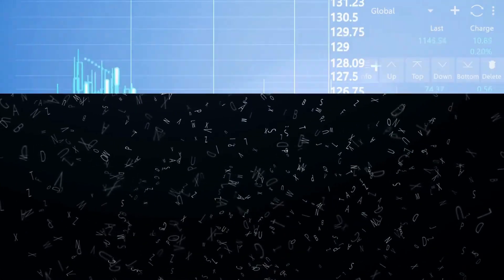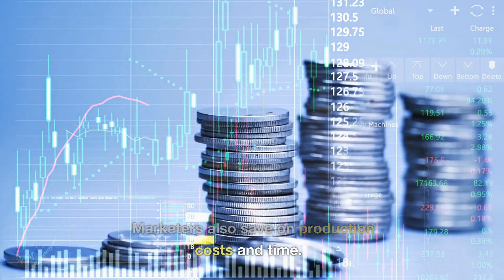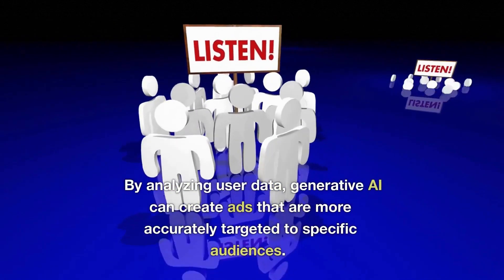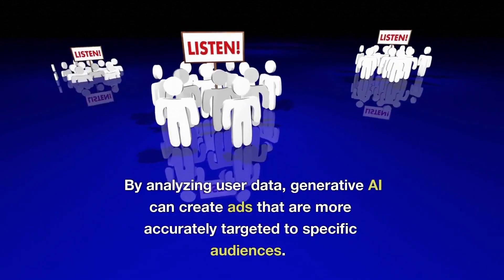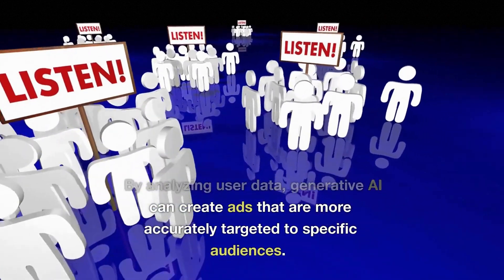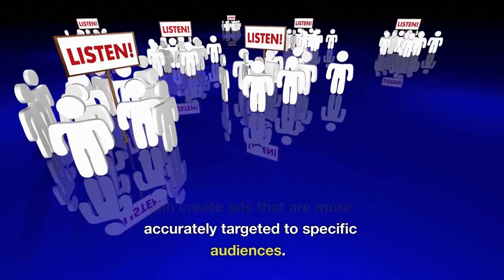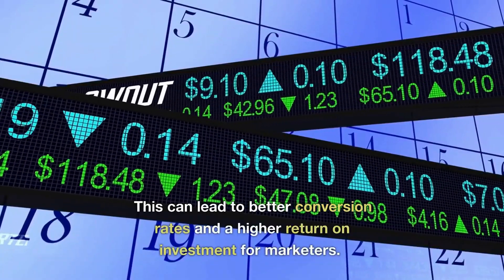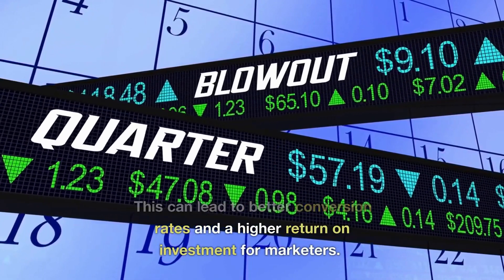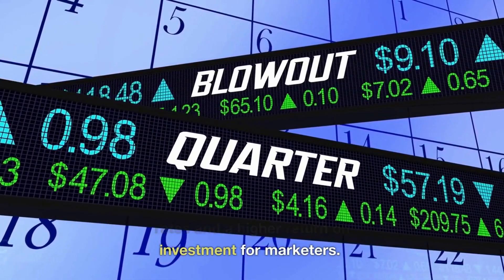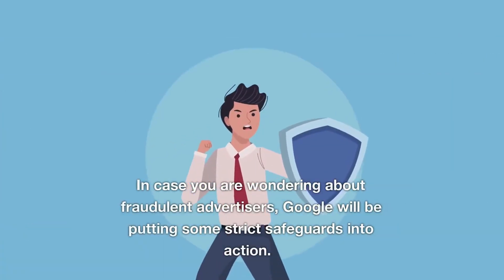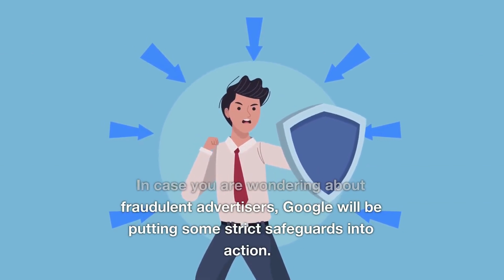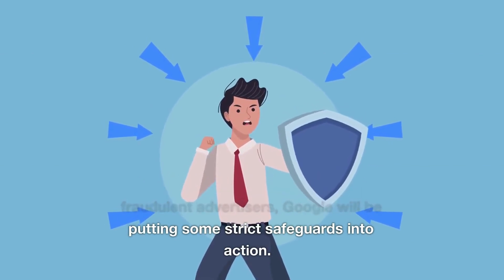Marketers also save on production costs and time. By analyzing user data, generative AI can create ads that are more accurately targeted to specific audiences. This can lead to better conversion rates and a higher return on investment for marketers. In case you are wondering about fraudulent advertisers, Google will be putting some strict safeguards into action.